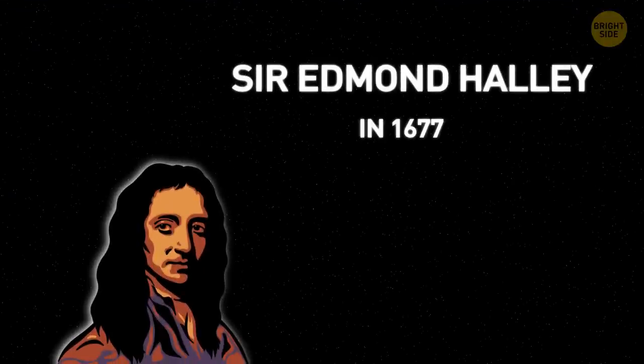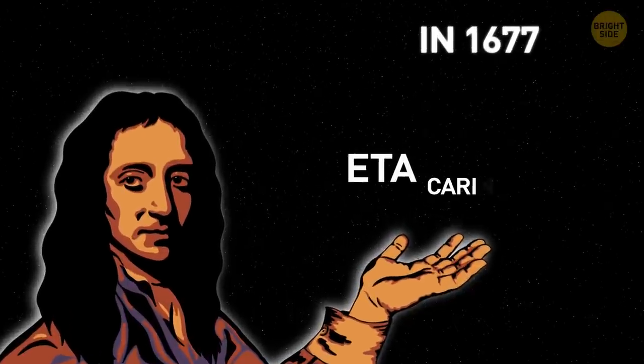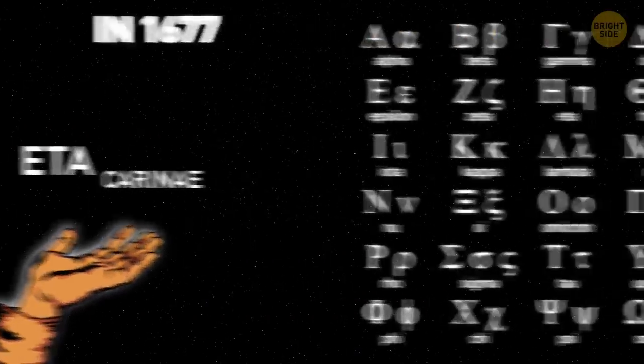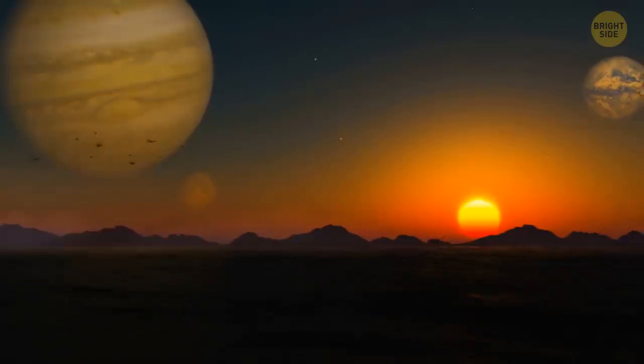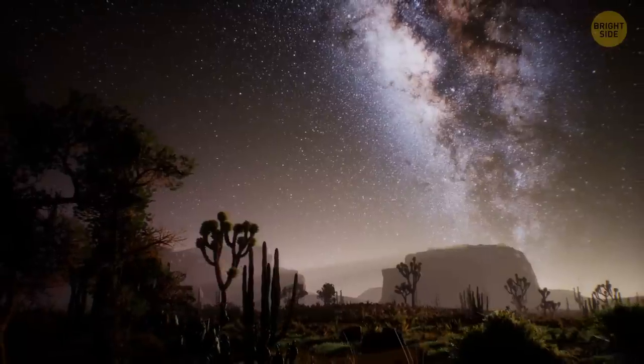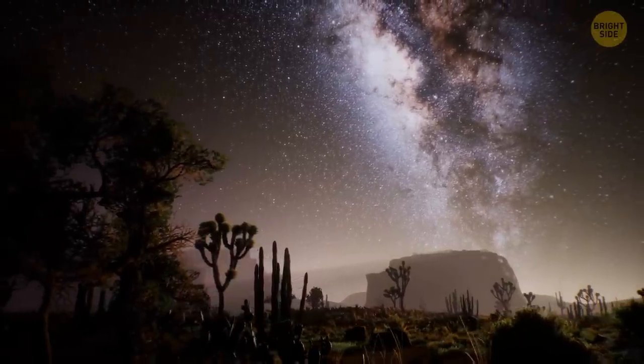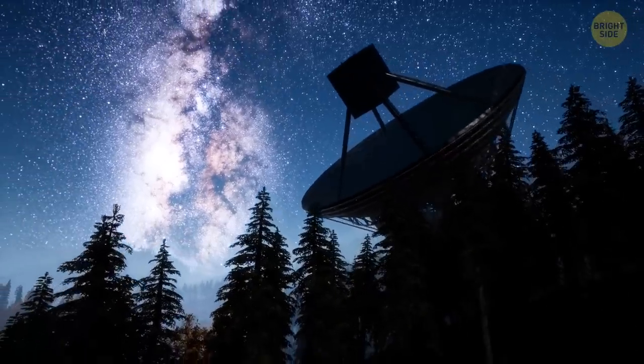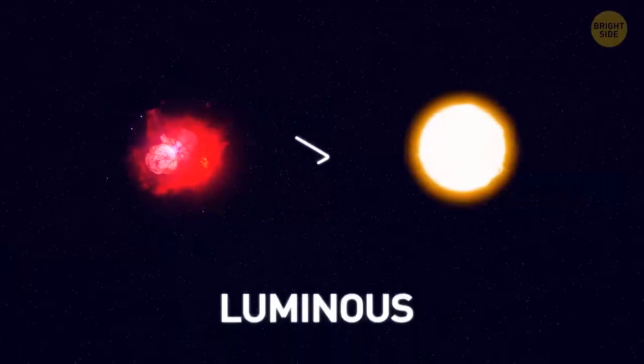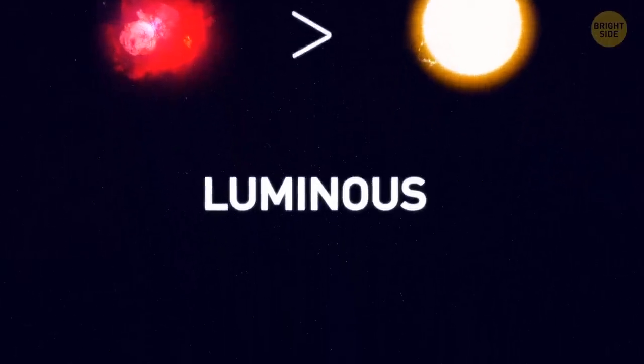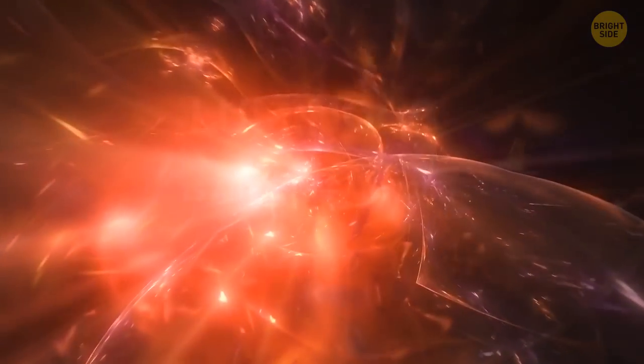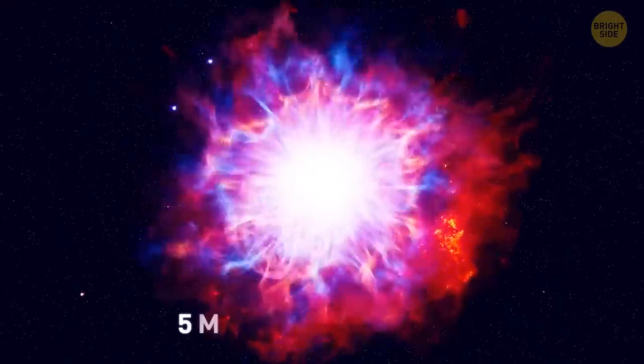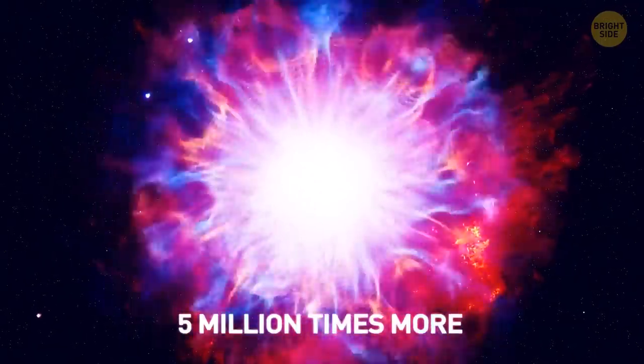Sir Edmund Halley, in 1677, recorded Eta Carinae as the seventh brightest star in the constellation Carinae. Eta being the seventh letter in the Greek alphabet. It might not have looked very bright to Sir Edmund and his contemporaries in the 17th century. But modern studies of Eta Carinae estimate it's 5 million times more luminous than our Sun. Luminous is a technical word astronomers use. It doesn't just mean brightness. Luminosity refers to the total energy released at all frequencies. Eta Carinae releases 5 million times more energy than the Sun.